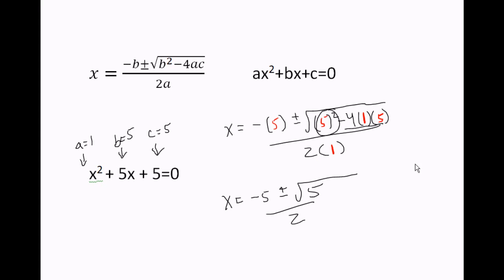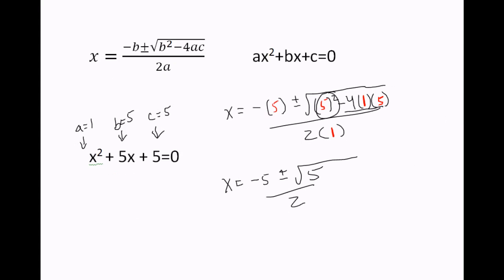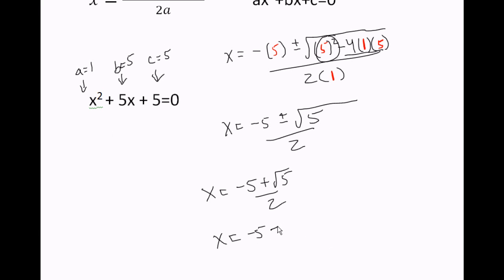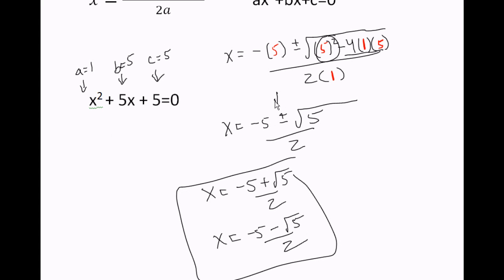So I have two answers. Nothing else reduces here. I have x equals negative 5 plus the square root of 5 over 2, and I have x equals negative 5 minus the square root of 5 over 2. Two separate answers — that plus or minus gives us two answers, one with plus and one with a minus.